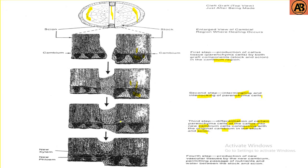New parenchyma cells form through callus formation between the rootstock and scion. The fourth step is the production of new vascular tissues by the new cambium, permitting the passage of nutrients and water between the stock and scion. New xylem and new phloem are produced from the callus bridge by the vascular cambium.